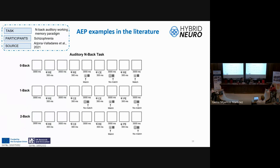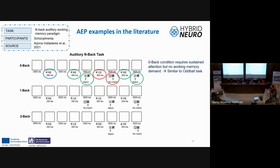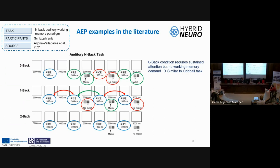As a literature example, Arconital performed an auditory N-back test with 50 schizophrenia patients. It consisted of three conditions: zero-back, where subjects identified whether the current sound matched a target; one-back, indicating whether two consecutive stimuli were the same; and two-back, indicating whether the current stimulus matched the one two events prior. The one-back and two-back conditions required working memory demand and attentional load, which was the objective of the study.